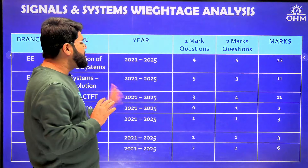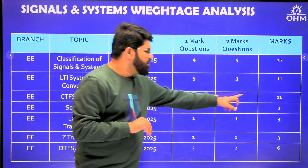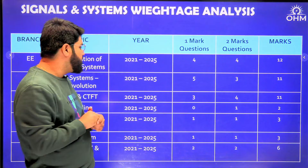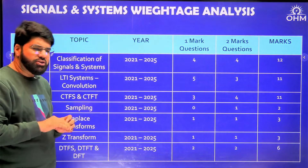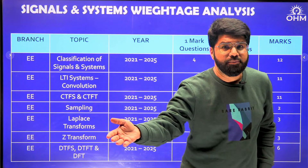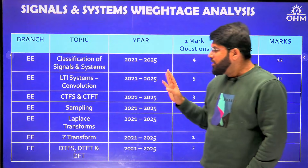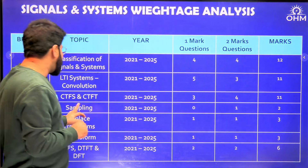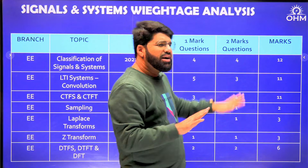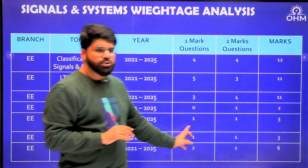CTFS and CTFT — almost everything is CT for EE. CTFS has very few questions; the eleven marks are almost all from CTFT with three questions of one mark and four questions of two marks. CTFT is more important for EE exclusively. Sampling had only one question plus two of two marks, and for EE you can expect normal regular questions — not very difficult ones — from sampling.